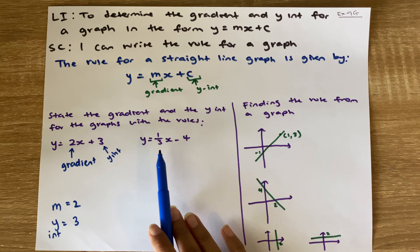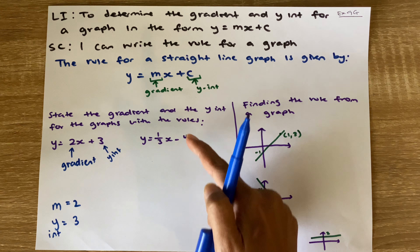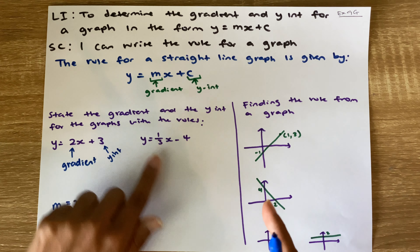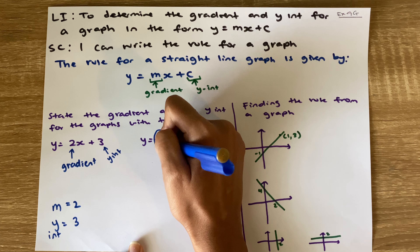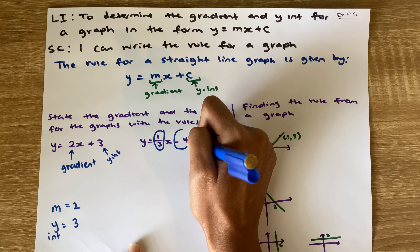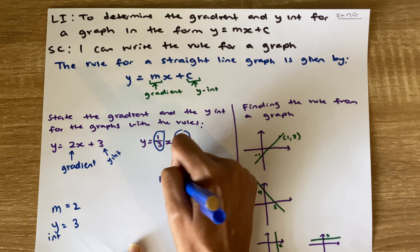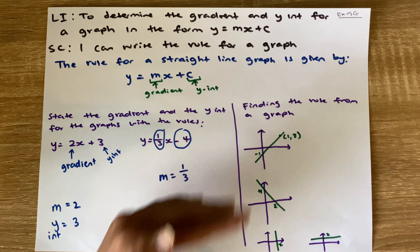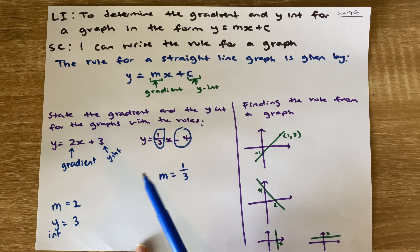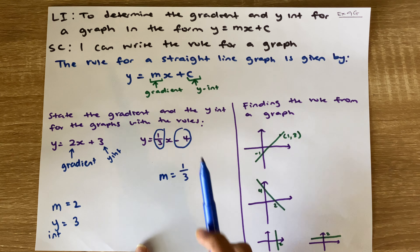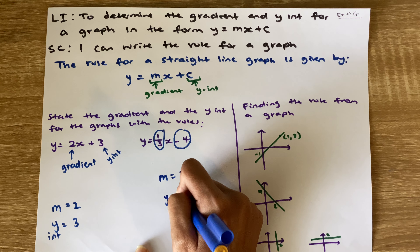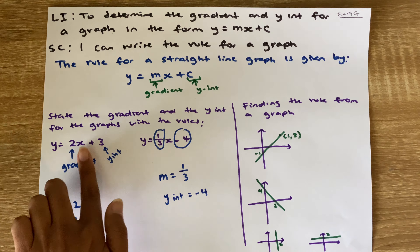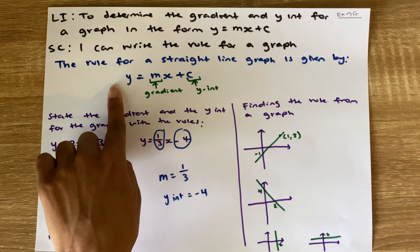This one over here: y equals one-third x take away 4. Again, I'm going to check that it's written in the same format — y equals value times x plus or minus value. Yes. So this value is my gradient and this one is my y-intercept. My gradient, m, is going to be one-third, and it's a positive gradient. And my y-intercept at the end has a negative sign in front of it, so it is going to be negative 4.